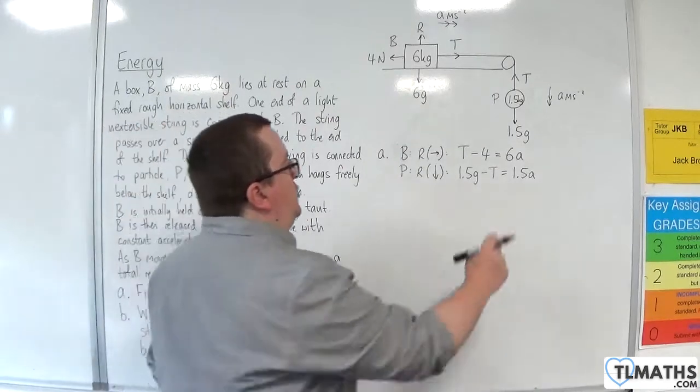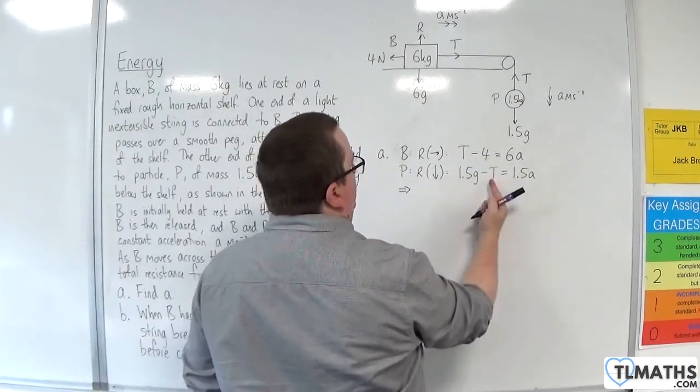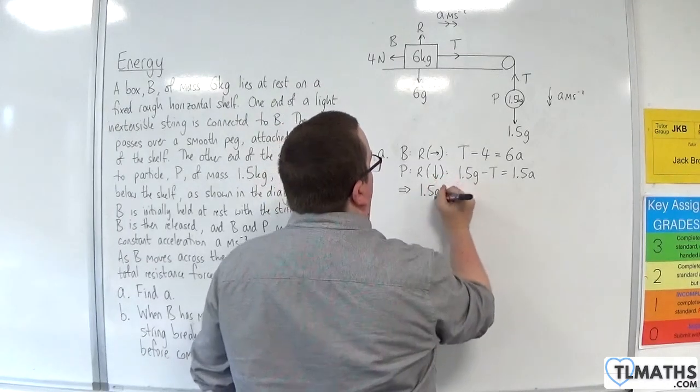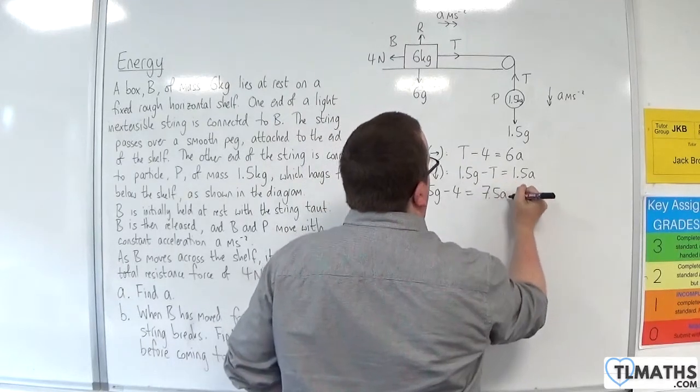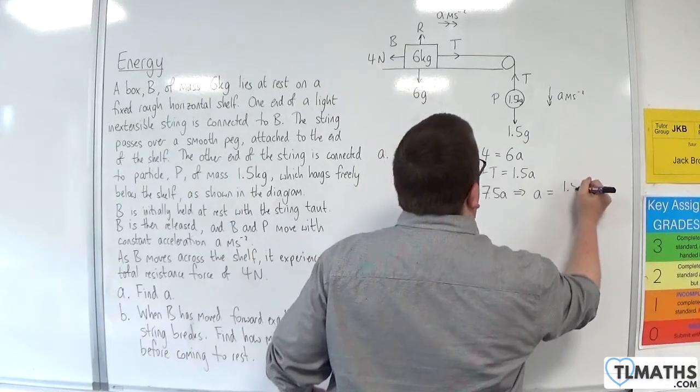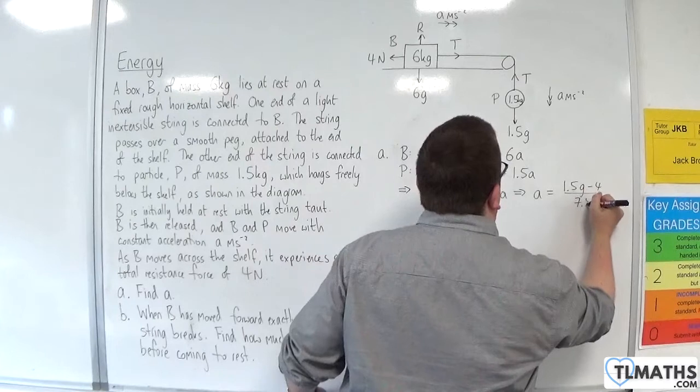So, if I add those two equations together, the t's are going to cancel. I'm going to have 1.5g, take away 4, is equal to 7.5a. And so, A is going to be equal to 1.5g, take away 4, over 7.5.